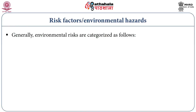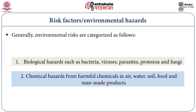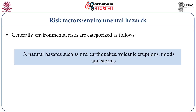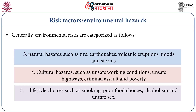What are risk factors or environmental hazards? Environmental risks are categorized in the following five categories. The first are biological hazards such as bacteria, viruses, parasites, protozoa and fungi. The second are chemical hazards from harmful chemicals in air, water, soil, food and man-made products. The third are natural hazards such as fire, earthquakes, volcanic eruptions, floods and storms. Fourth, we have cultural hazards such as unsafe working conditions, unsafe highways, criminal assault and poverty. And finally, lifestyle choices such as smoking, poor food choices, alcoholism and unsafe sex.